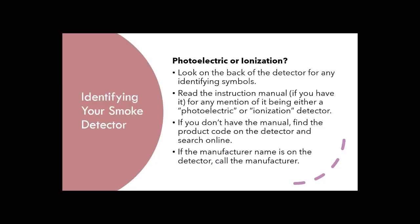Identifying your smoke detector. There are two broad groups of smoke detectors that we see: photoelectric or ionization. The ionization units have a radioactive isotope, and there will be information on the unit's label that will help you recognize the unit as having a radioactive isotope. The photoelectric units also have information on the unit label.